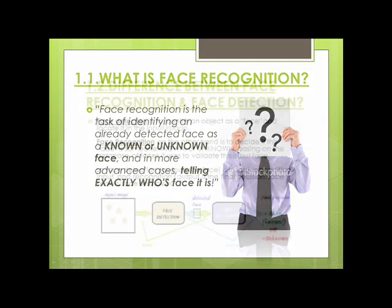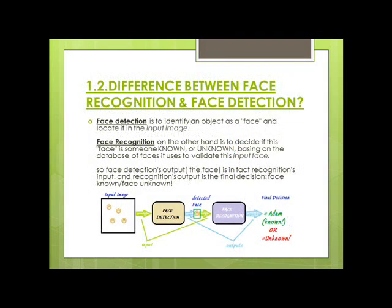Let's look at the difference between face detection and recognition. There is a lot of confusion because we use these terms interchangeably, but technically they are different. Face detection is identifying an object as a face and locating it in the input image, whereas face recognition is the task of deciding if this detected face is someone known or unknown, based on a database of faces used to validate the input face.